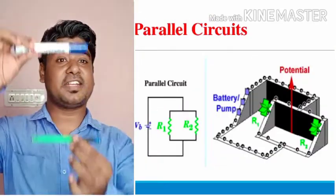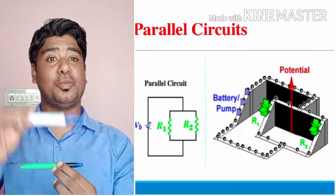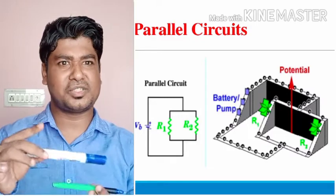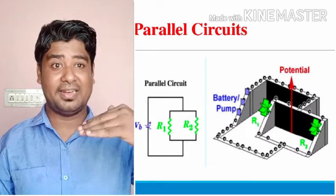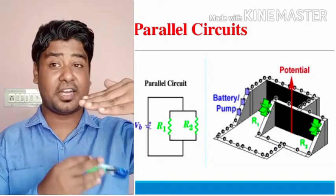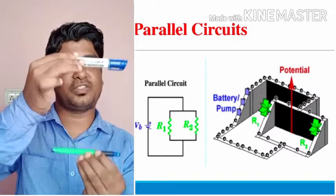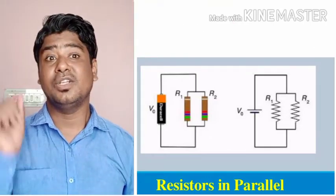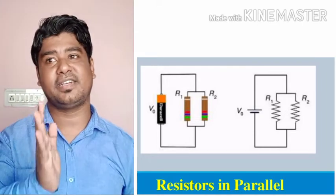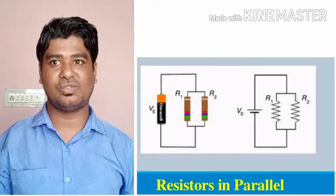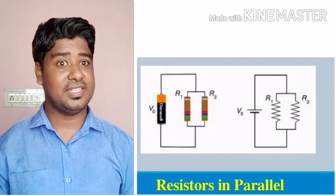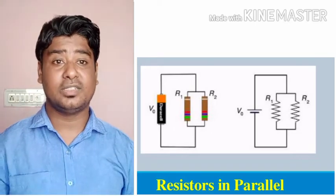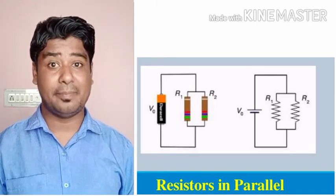When resistors are connected in parallel, like two parallel lines in mathematics that never meet, the resistors are placed parallel to each other — you can check the slide here. In series, the sum of all resistances equals the total resistance. What happens in parallel? As we saw in series, the current is constant and voltage varies; in parallel it is exactly the opposite.